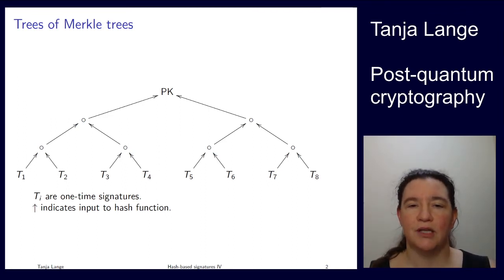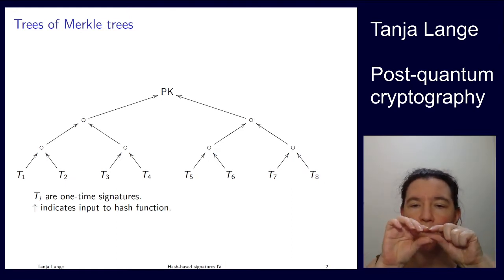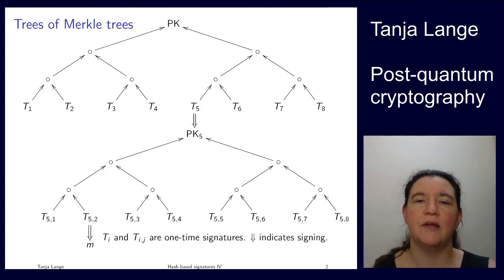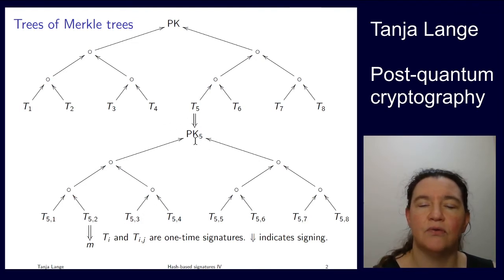Now when you build a tree of a tree, then the idea is that you can use the bottom layer, those eight one-time signatures, not to directly sign messages, but to sign public keys of the next level. So we're using this first tree as a tree that publishes the public key that everybody knows from us. But then those T1 till T8 are used to sign one level lower public keys that only stick around for the eight messages that they're used for.